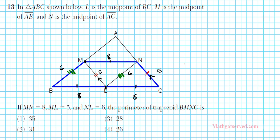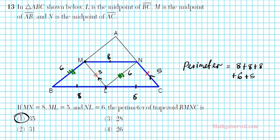So we now have the measures of our trapezoid. The perimeter is going to be 8 plus 8 — these two parallel sides — plus 6 plus 5 for the two non-parallel sides. That gives us 24 plus 11, and the final answer is 35. Option number 1.